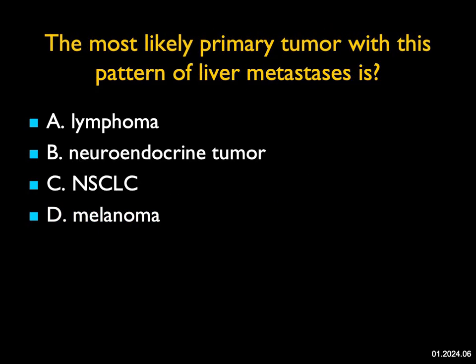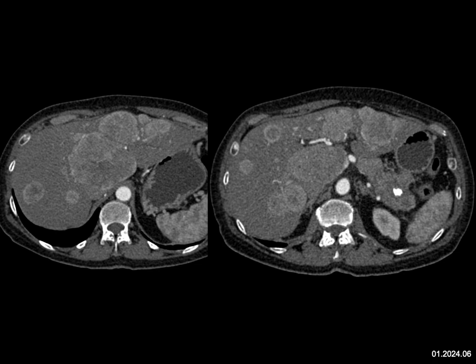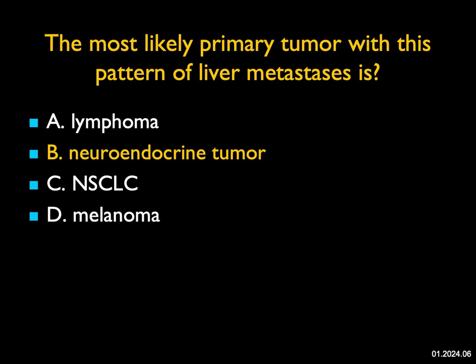The most likely primary tumor with this pattern of liver metastasis is? The patient has widespread vascular metastases in the liver. Lymphoma and non-small cell lung cancer are typically hypovascular, and melanoma is most commonly hypovascular though occasionally could have increased vascularity, but not to this extent. This is typically going to be a neuroendocrine tumor. When you look carefully at the study, there's a mass in the tail of the pancreas with calcification — this was indeed a pancreatic neuroendocrine tumor. Just a very classic example.